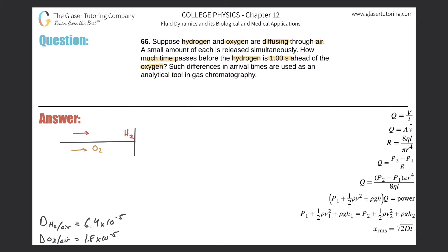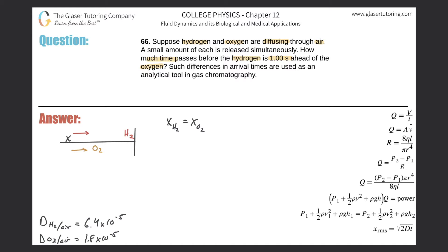Basically we have two things going on. Both items are going to travel this particular distance — let's call it x, since that's what's in the formula. So we can say that the distance hydrogen will travel will equal the distance oxygen will travel. That makes sense. Hydrogen arrives at this line first, essentially ahead of oxygen by one second — oxygen is delayed with respect to hydrogen.